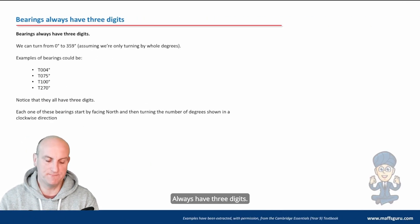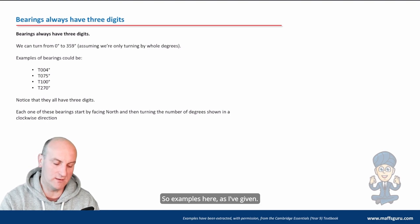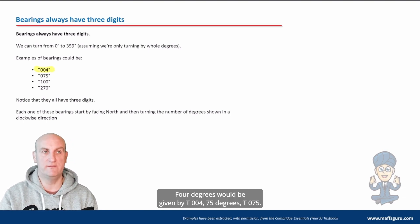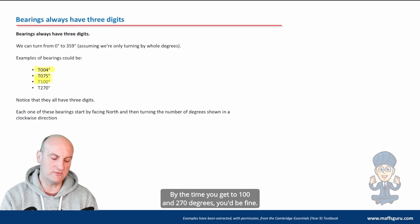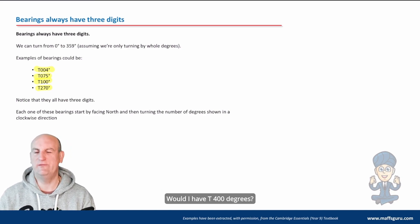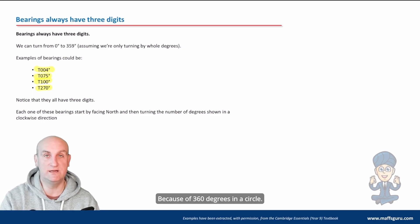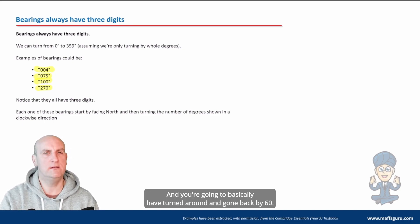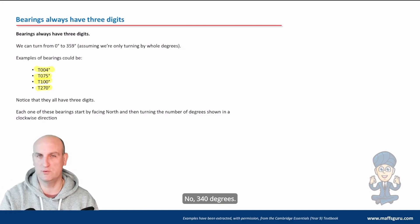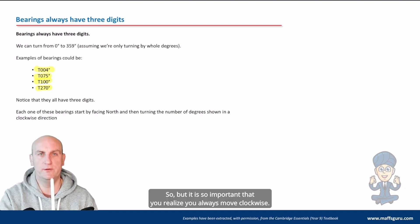Always have three digits. So examples here, as I've given, four degrees would be given by T 004, 75 degrees, T 075. By the time you get to 100 and 270 degrees, you'd be fine. Would I have T 400 degrees? Probably not. Why? Because it's 360 degrees in a circle. And you're basically going to have turned around and gone back by 40 degrees. That was really bad maths. But it is so important that you realize you always move clockwise.